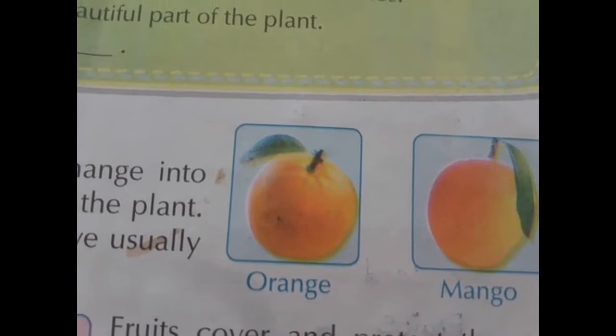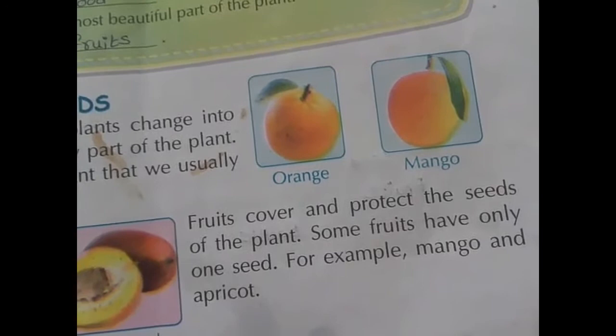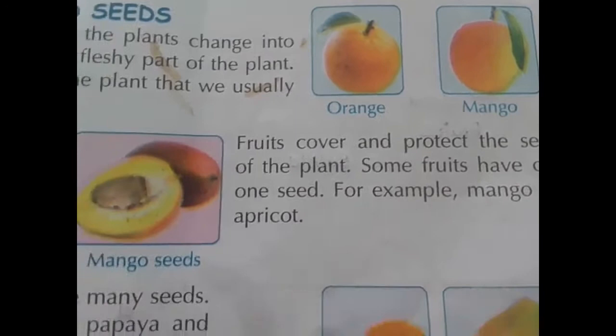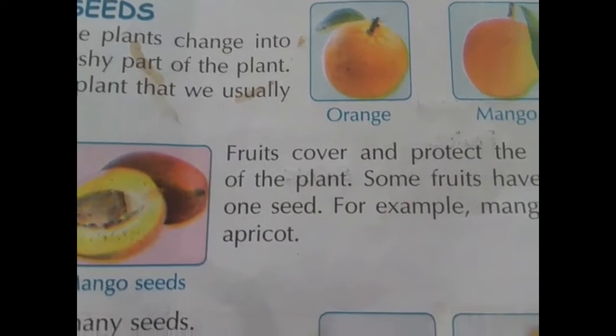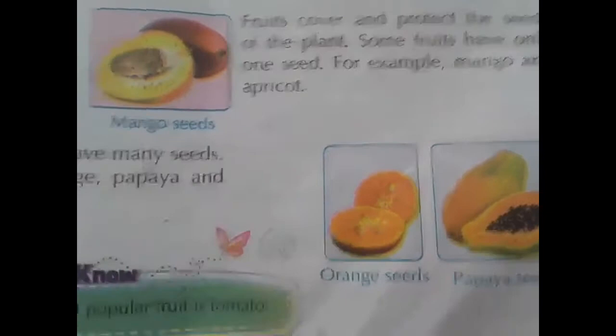See the picture — orange and mango. In orange, how many seeds are there? So many seeds are there. In mango, there is only one seed. Some fruits have only one seed — for example, mango and apricot. The fruits having many seeds are orange, papaya, watermelon, etc.